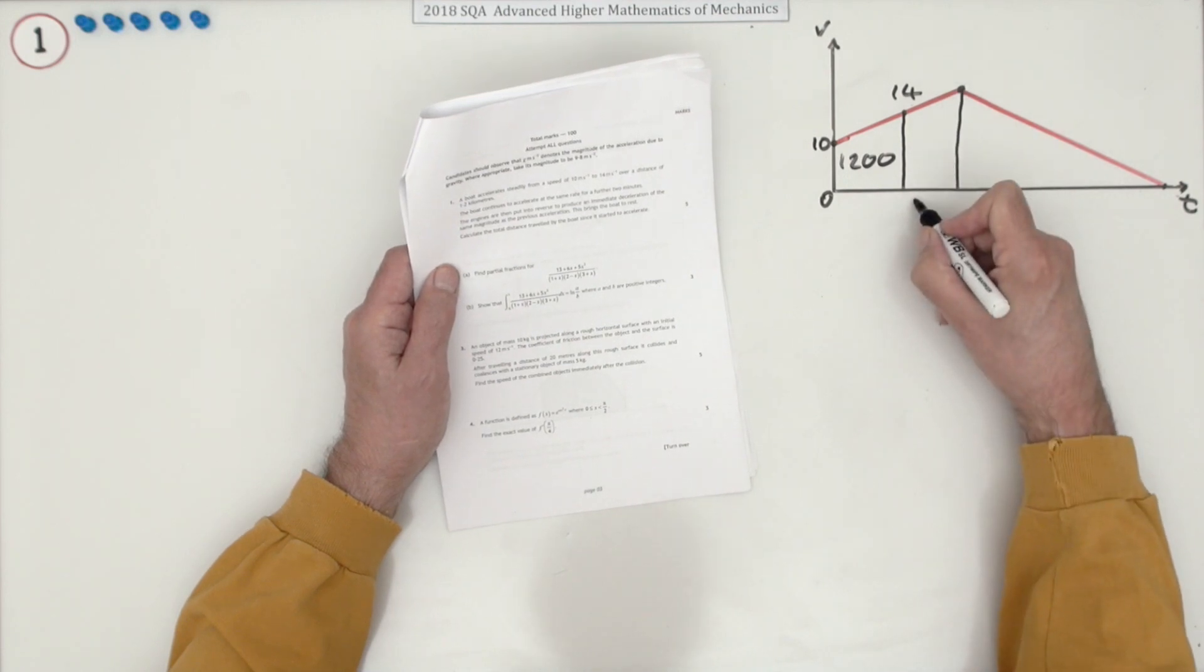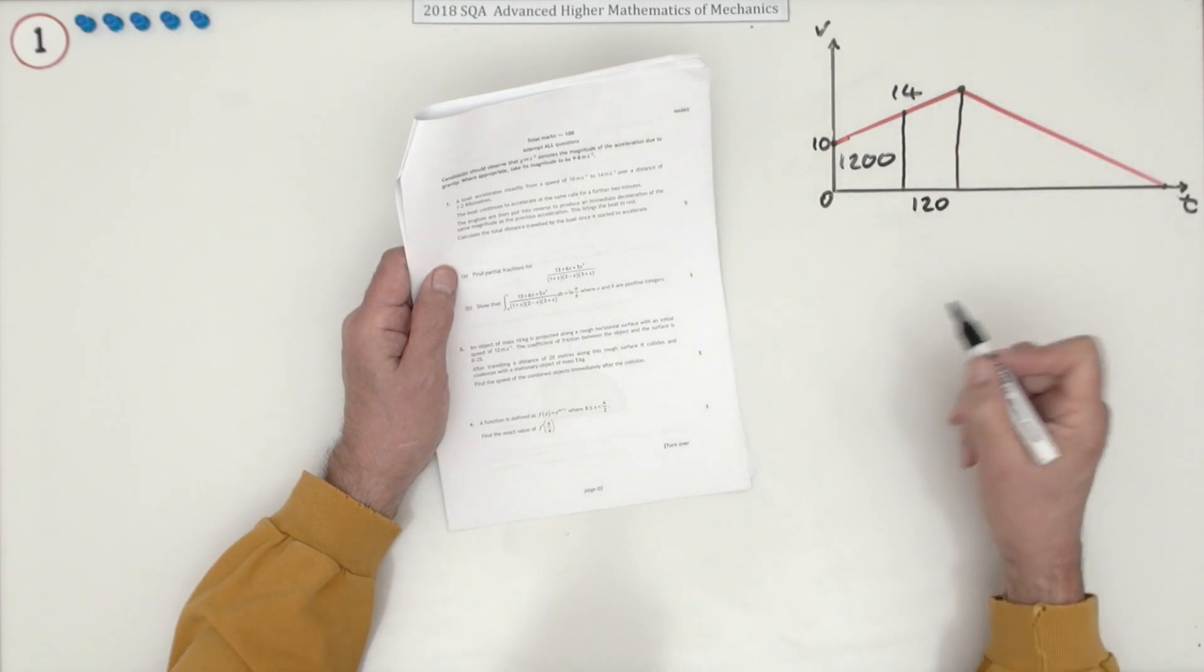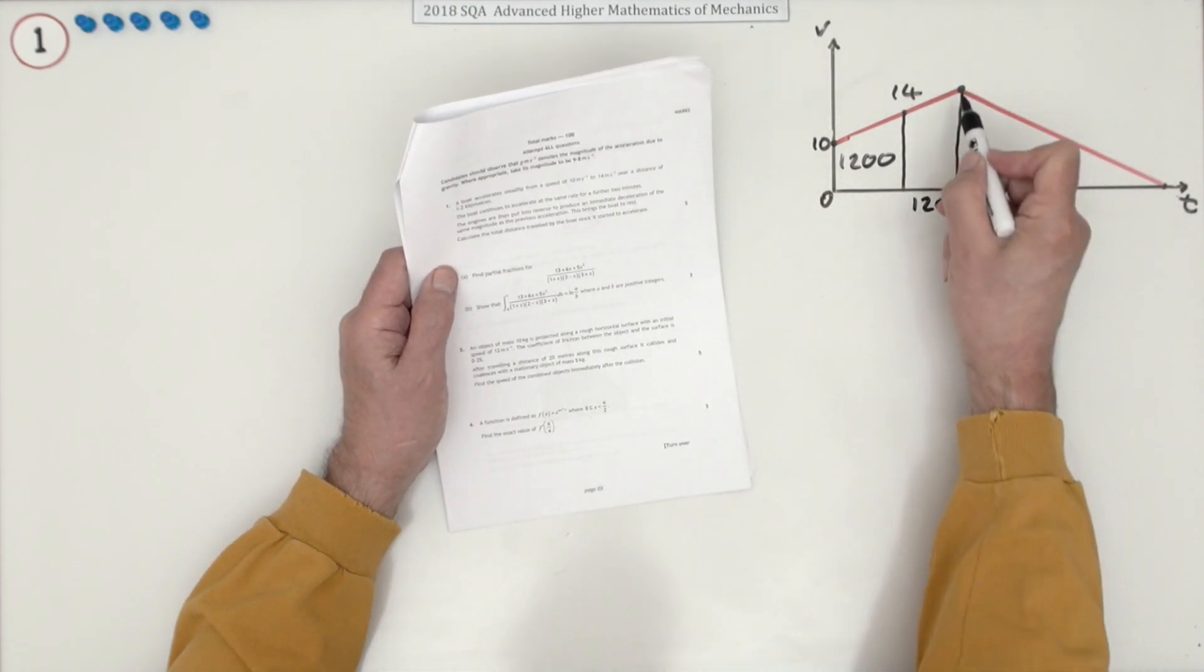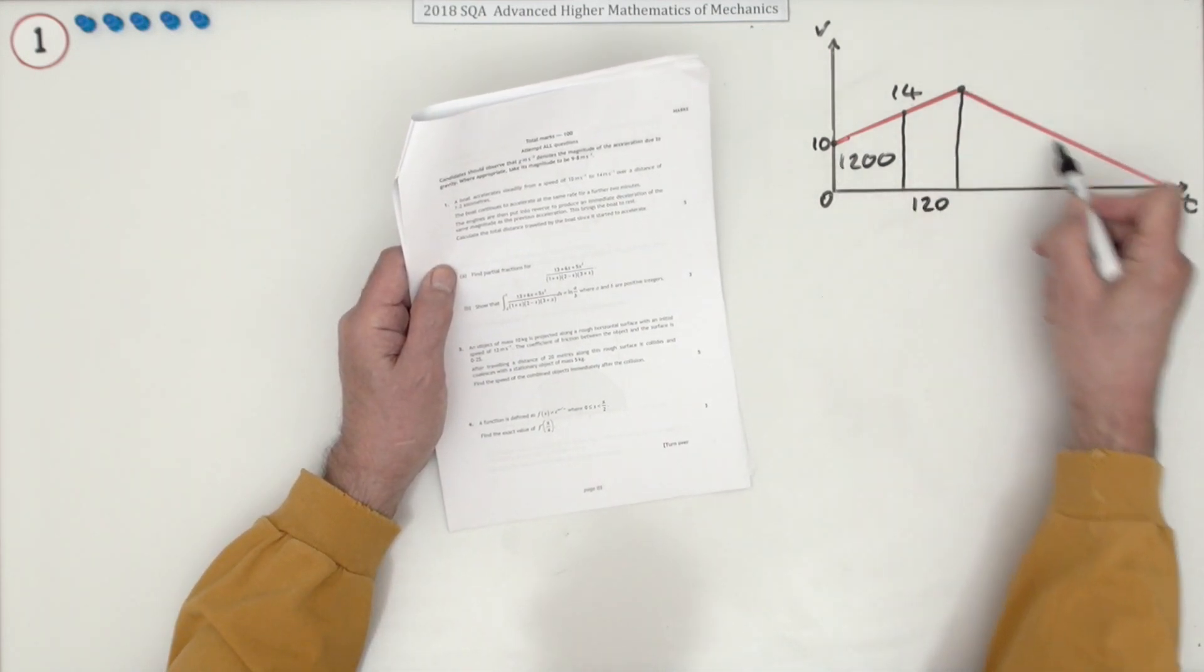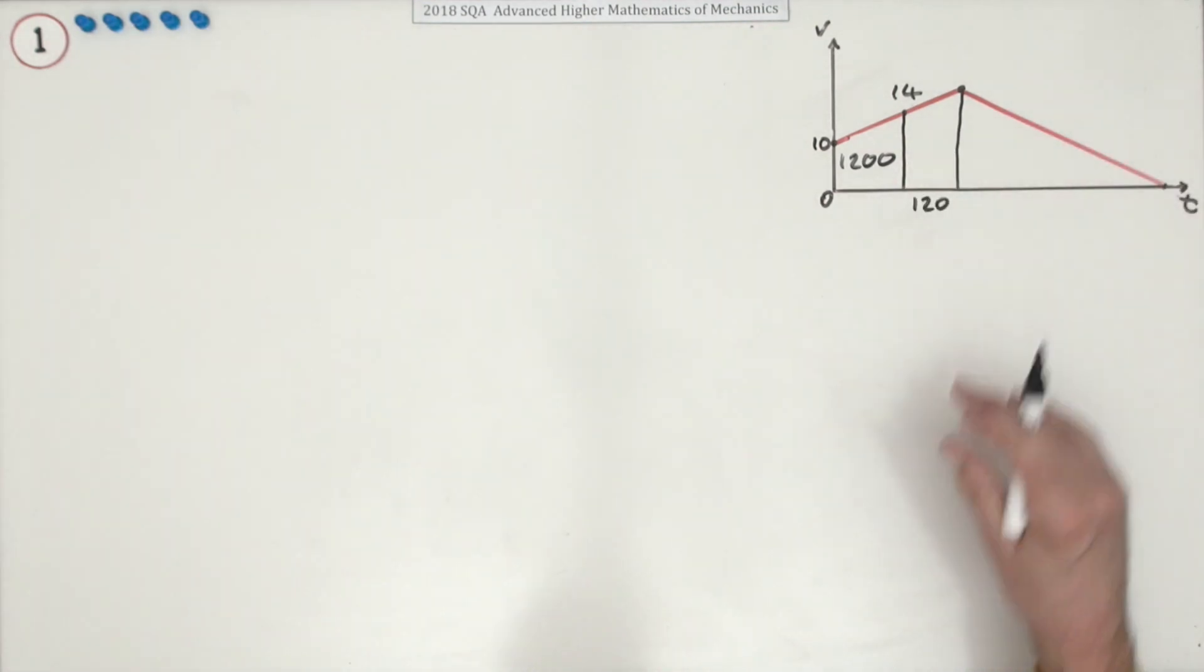So I know that time interval, that's two minutes, so it's 120 seconds to reach some maximum speed and then decelerates at the same rate. So that's the same gradient, only negative, until it comes to rest. The question is what's the total distance?